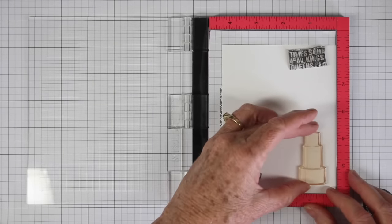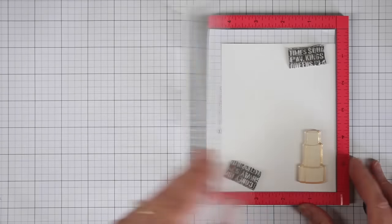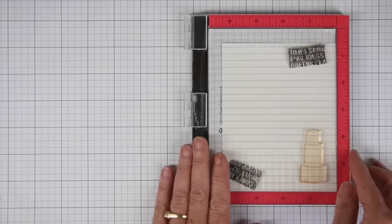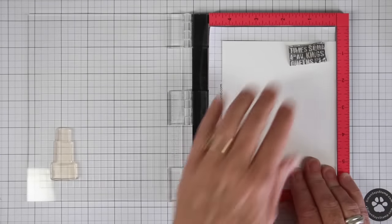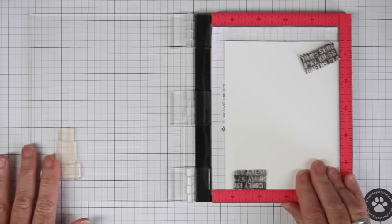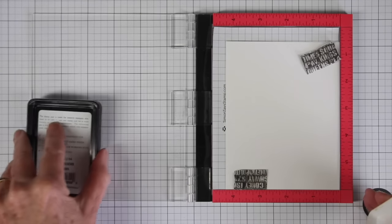I use mine left handed. So if you were doing it the other way for a right handed person, you'd have it the other way. But I put the image down and then I shut the door and then I open the door back up and my stamp is in place.